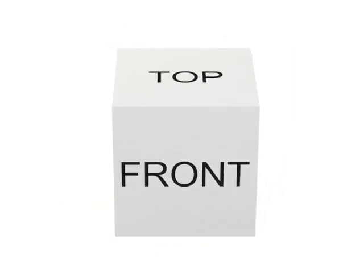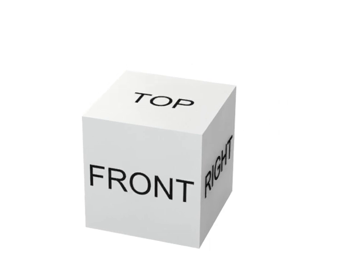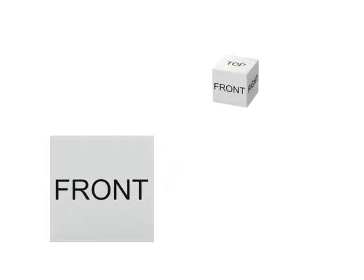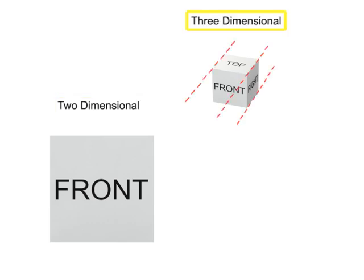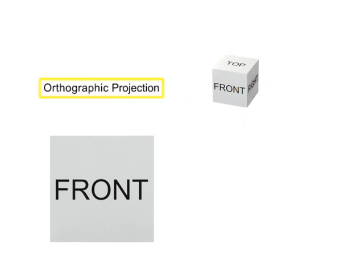An item in the real world is three-dimensional, yet the design team must communicate information about the item on a two-dimensional drawing. To avoid the distortions that occur when attempting to draw a three-dimensional item on a two-dimensional surface, designers have come up with a method called orthographic projection. In this method, each view is related by 90 degrees of separation.